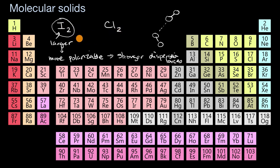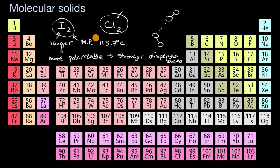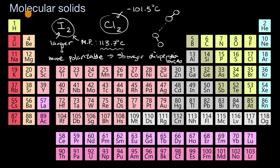The numbers confirm this: the melting point of solid iodine is 113.7 degrees Celsius, while the melting point of solid molecular chlorine is negative 101.5 degrees Celsius — very cold. Iodine has a higher melting point because of its stronger dispersion forces. That said, these dispersion forces are still not that strong, and both melting points are quite low compared to other types of solids we've looked at.